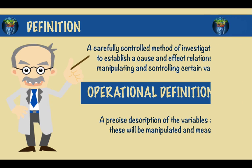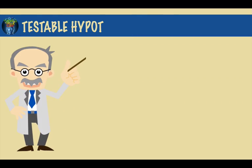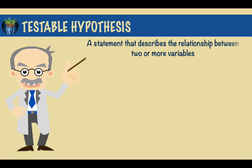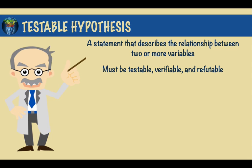The scientific method also includes a testable hypothesis, which is a statement that describes the relationship between two or more variables. This hypothesis must be testable, verifiable, and refutable.